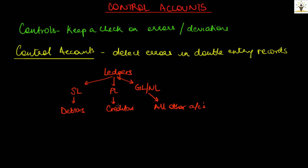So when a trial balance is prepared, and if the debit side and the credit side do not match, it is a clear indication of one or more errors in the ledgers. But it does not suggest which ledger or which section of the accounting records to look for errors. So here is when control accounts are useful.